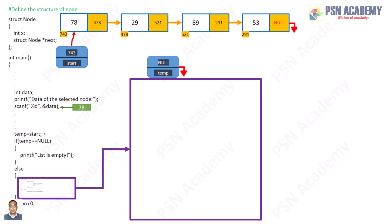So we write temp equal to start. Start is holding the address 743, so 743 is loaded inside the temp variable. As soon as you write 743 in temp, the null vanishes and it establishes a link to the first node. Now there is a check: if temp is null, that means start is null, then the list is empty. If it is not null, that means there is at least one node in the list.